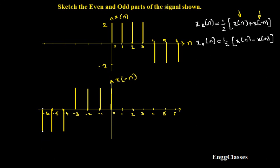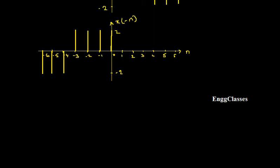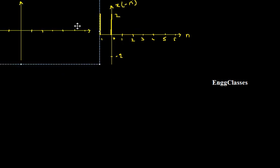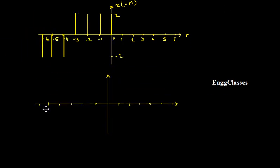So this is how the reflected version of x(n) looks like, with amplitude plus 2 on the positive side and minus 2 on the negative side. The next task is to sketch the even part — I need to add the two signals and divide by 2. Let me set up the x and y axes for that.